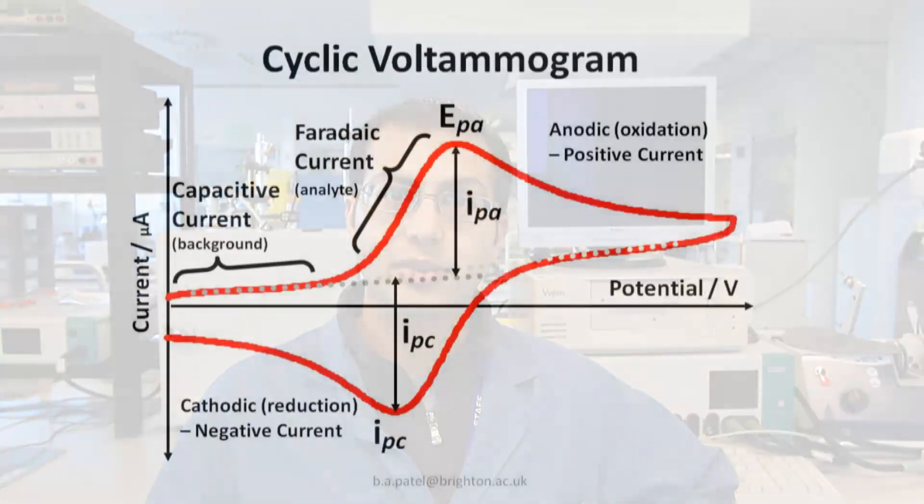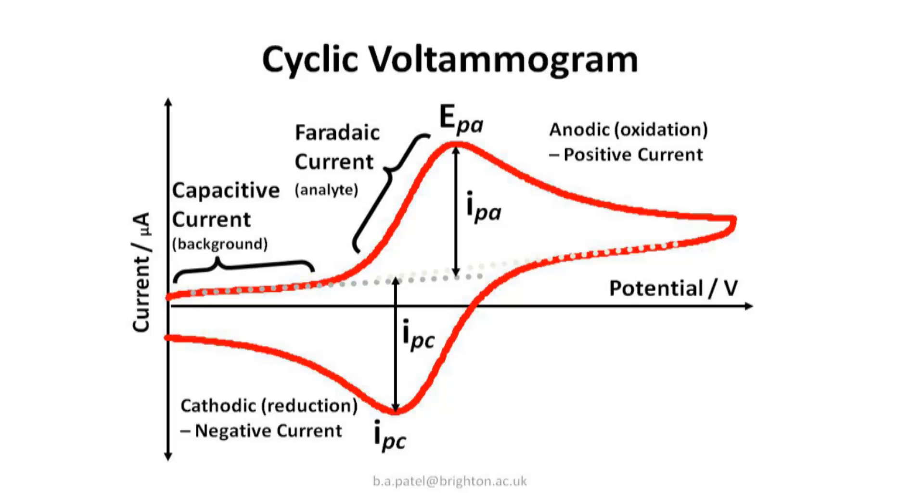Hello and welcome to this short video on voltammetric methods. Voltammetry is a technique that utilises a potential ramp or a potential shift and monitors the resulting current. The voltammetry I'm going to be talking about specifically is a technique known as cyclic voltammetry, and it's the most diverse voltammetric technique that's utilised.